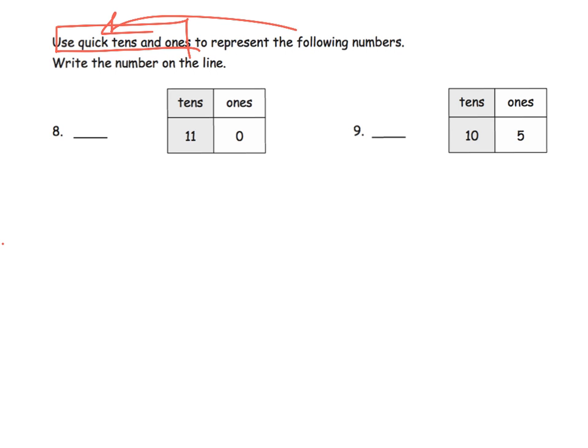So let's take a look at question 9. Question 9 I think is more interesting than question 8. So we've got 10 tens plus we have 5 ones. What is our number that we're going to write? Well that's going to be 105.